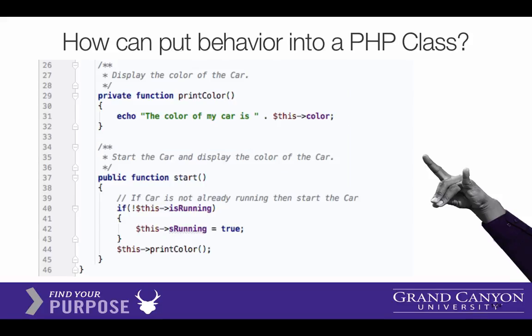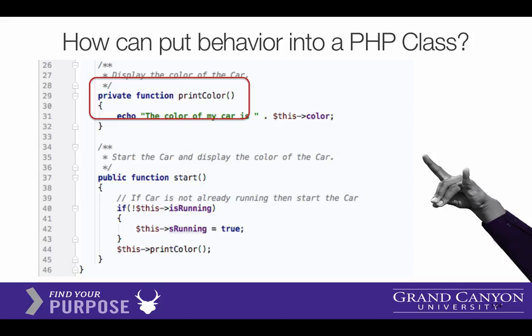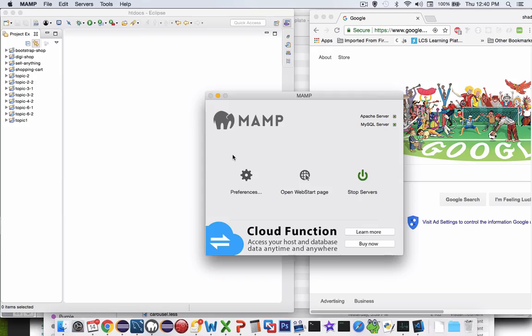Here are two other functions we could put in our car. We could say print the color — I could tell you what color my car is. I could also create a function that changes the status of the motor, whether it's running or not. You might also notice the strange word this — dollar sign this refers to the current car. You could think of it as myself, and the arrow means my color.